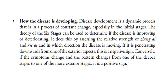Next, how the disease is developing. Disease development is a dynamic process that is in a process of constant change, especially in the initial stages. The theory of six stages can be used to determine if the disease is improving or deteriorating. It does this by assessing the relative strength of zang qi and pathogenic qi, and in which direction the disease is moving. If it is penetrating downwards from one of the exterior aspects, this is a negative sign. Conversely, if the symptoms change and the pattern changes from one of the deeper stages to one of the more exterior stages, it is a positive sign.